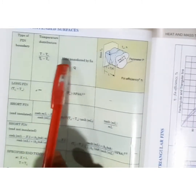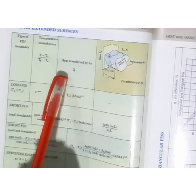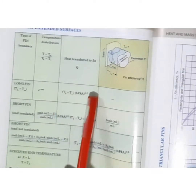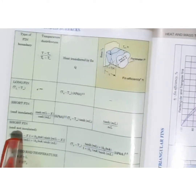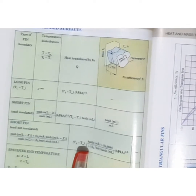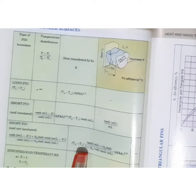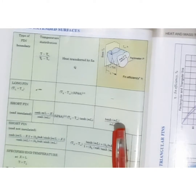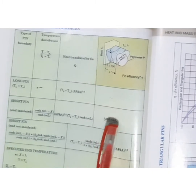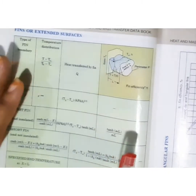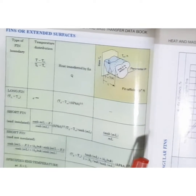The next column in the data book is heat transferred by the fin. For the long fin, use the long fin heat transfer formula. For the short fin insulated at the tip, use that corresponding formula. For the short fin without insulation at the tip, use the respective formula. There is also a column for fin efficiency. The fin efficiency formula is tanh mL divided by mL, which applies across the fin types. These formulas in the data book are what you will use to solve fin problems.